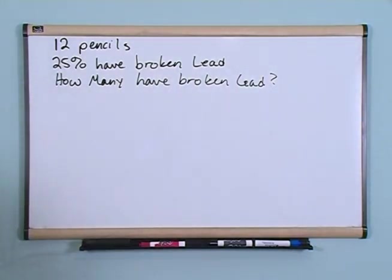So what we're going to end up doing is we're going to take the 12 pencils that we have and multiply by the 25%. We're going to multiply by the 25%, but we're going to do it a little bit differently.